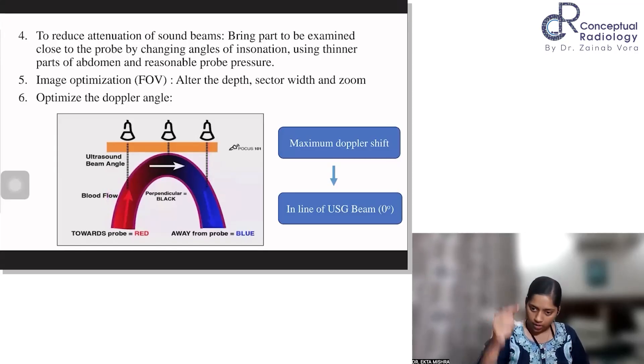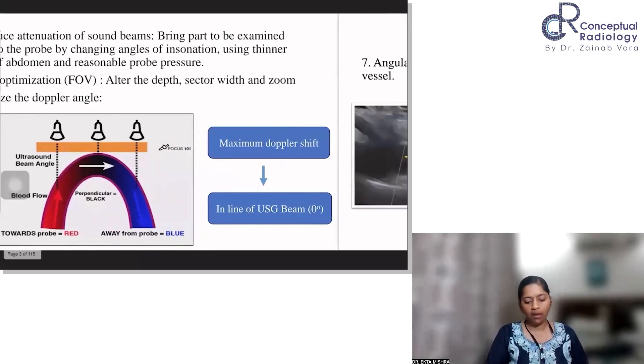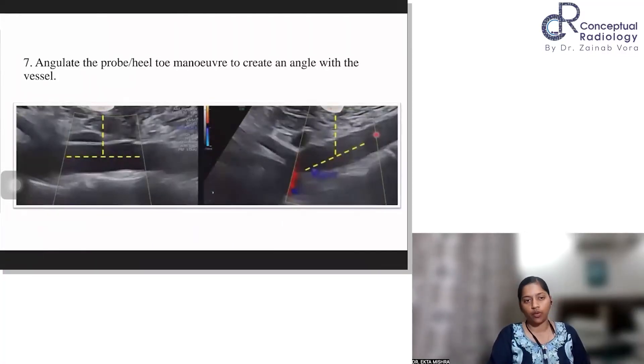So the maximum Doppler shift occurs when your ultrasound beam, the angle of insonation and the flow, whether towards or away, is in the same line. So if it is in the same line as the ultrasound beam, you get maximum Doppler shift. And the calculation of velocity and the spectral tracing, they will all be perfect. As your angle increases, the chances that you get a false reading, the false low PSVs and altered spectral tracing would increase. So remember to keep your angle always less than 60 degrees.